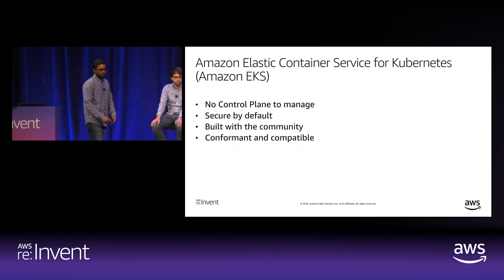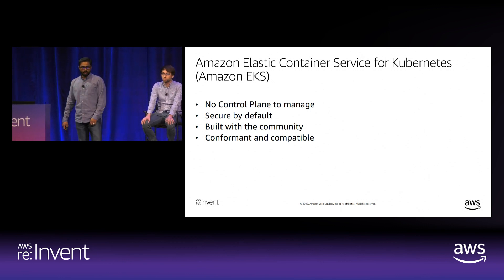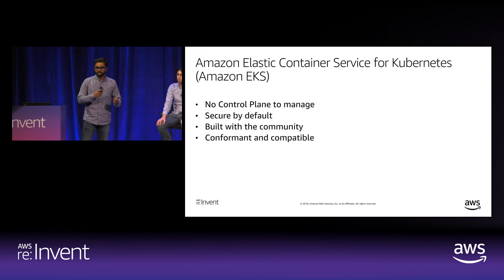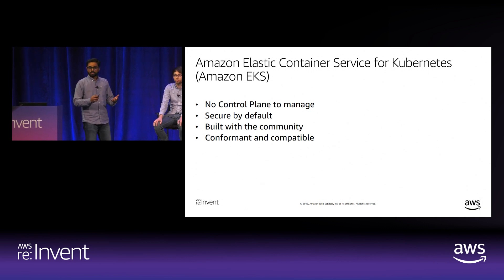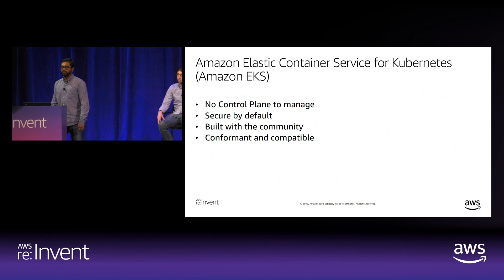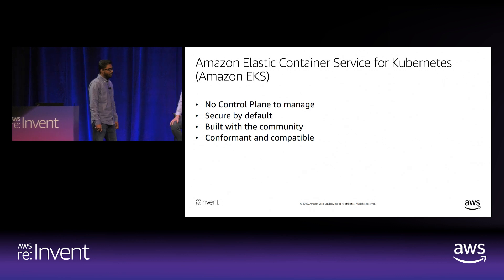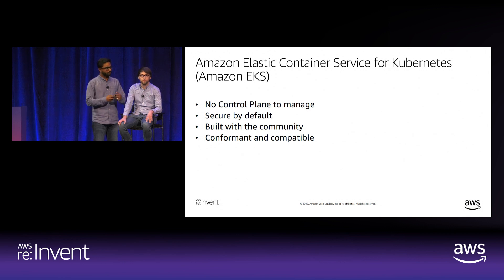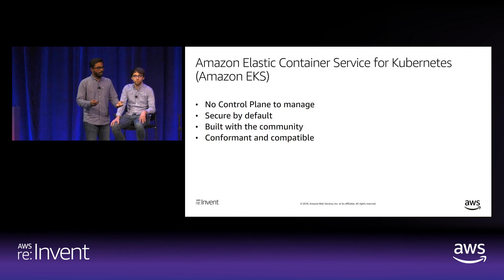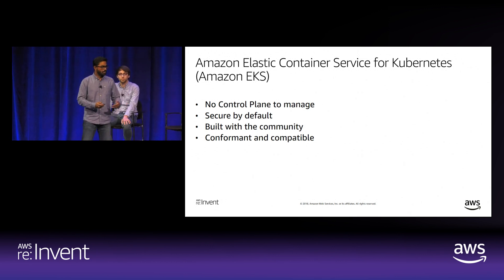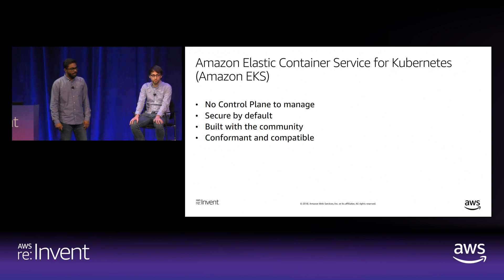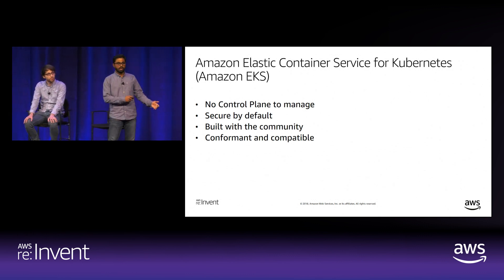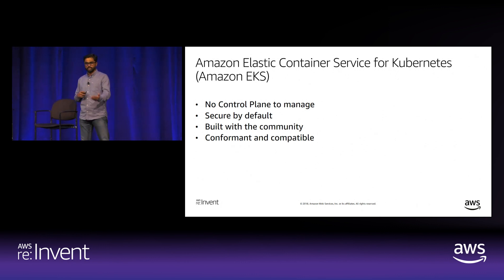EKS is the container service for Kubernetes—you don't have a control plane to manage. Kubernetes is very tweakable with many configurations, and we make it easier to host the Kubernetes orchestration engine on AWS. It's secure by default: we establish a secure communication channel between worker nodes and control plane nodes. We work closely with the Kubernetes community, contribute back upstream, and run Kubernetes conformant—so any Kubernetes workload will run successfully on EKS.